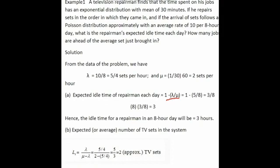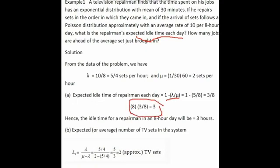What is the expected idle time each day? Since the repairman works 8 hours per day, not 24 hours, the expected idle time equals 8 into 3 by 8, which gives 3 hours per day.